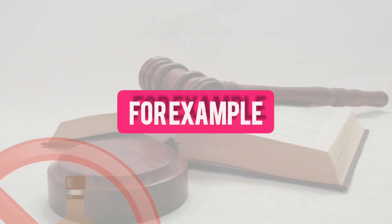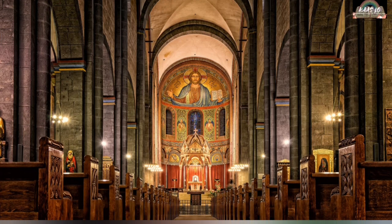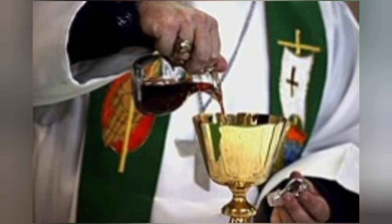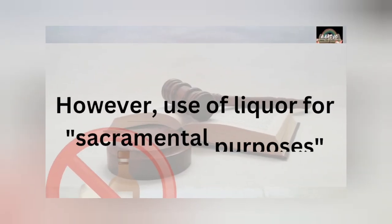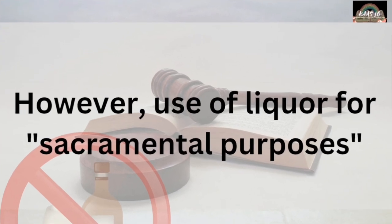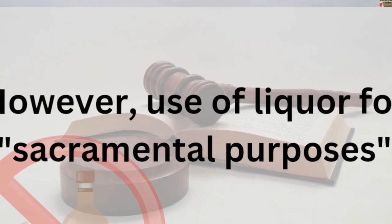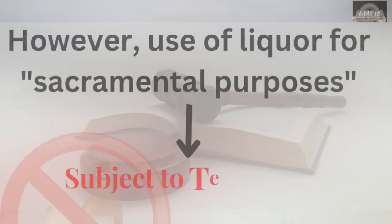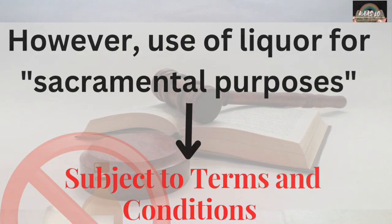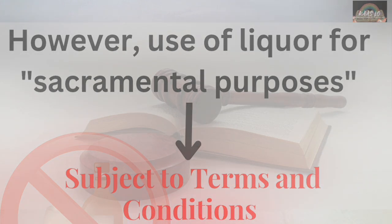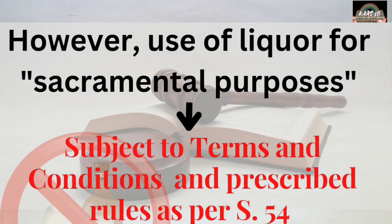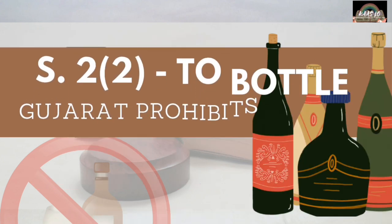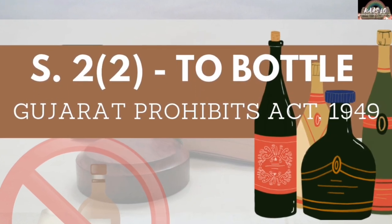For example, the use of liquor in churches for religious or sacramental purposes. However, the use of liquor for religious or sacramental purposes is subject to terms and conditions, or the prescribed rules, as per Section 45 of the Gujarat Prohibition Act 1949.